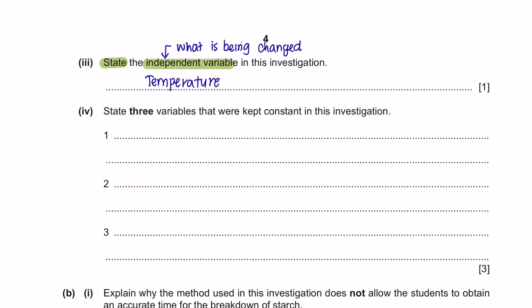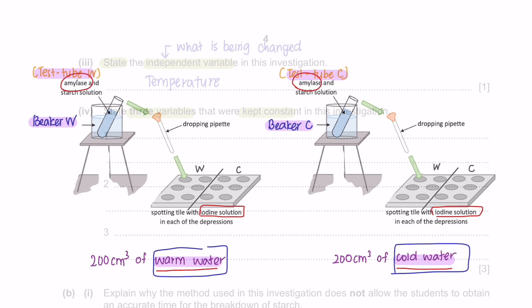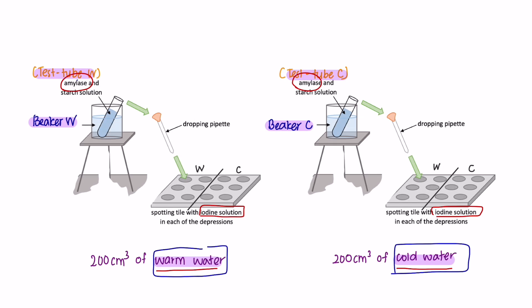Next, Part 4, state 3 variables that were kept constant in this investigation. There were several things that were kept constant in this investigation. For instance, the number drops of iodine solution initially into all the dimples. The volume of amylase being used in all the test tubes. And also the concentration was the same.